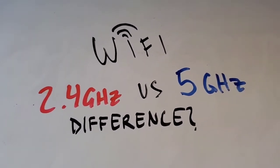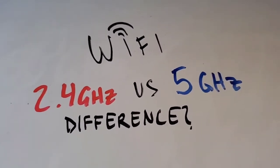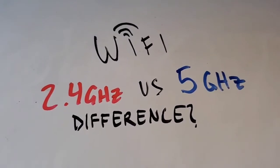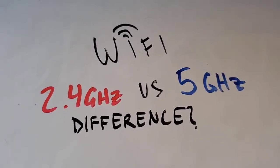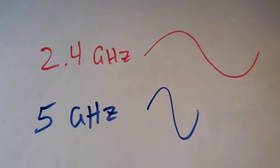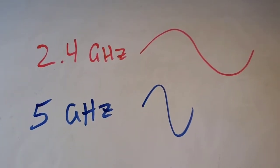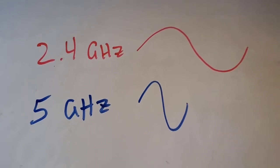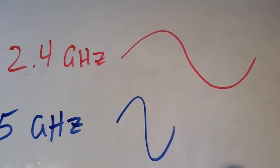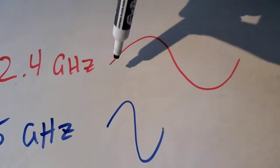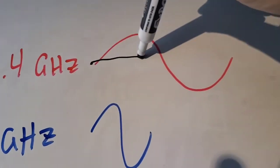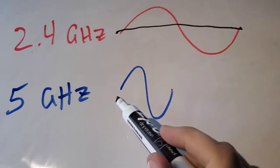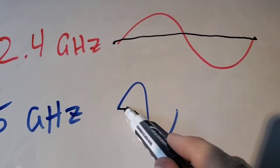2.4 gigahertz versus 5 gigahertz — what is the difference when we're talking about Wi-Fi? They represent different frequencies which have different wavelengths. 2.4 gigahertz actually has a wavelength which is longer than 5 gigahertz.